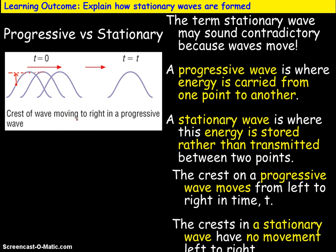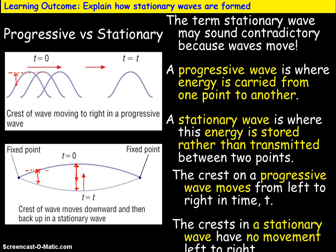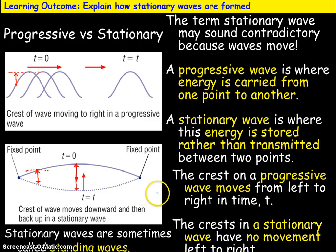In a stationary wave, there is no movement of the wave from left to right — the peak stays in the same place. A point near the edge will only oscillate between a limited range, unlike a point in the centre which will still oscillate at the maximum. Each point on a stationary wave has a different amplitude. We also sometimes call stationary waves standing waves, and those two terms are interchangeable. A progressive wave transfers energy; a stationary wave stores energy.